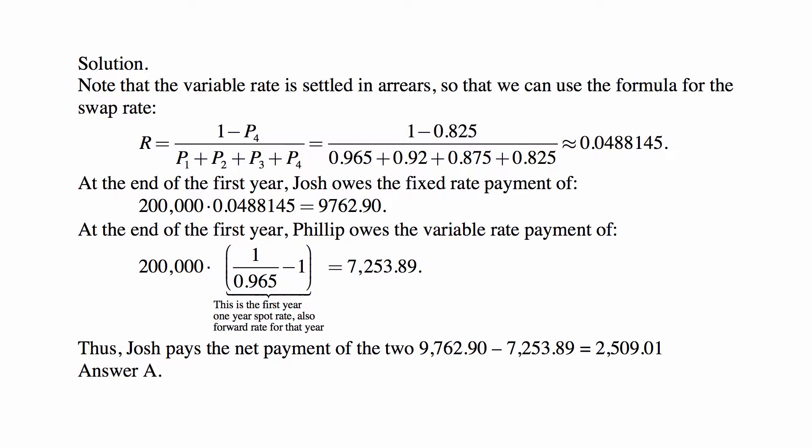So the numerator is 1 minus 0.825, and the denominator is 0.965 plus 0.92 plus 0.875 plus 0.825 — these are the numbers given in the problem. We just plug them in and we get the fixed rate.